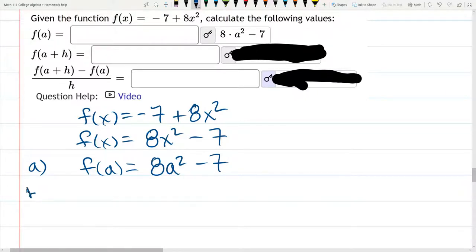Part b is similar. We're going to plug in a plus h. What I did here mathematically is not correct because if you write it like this, it means you're multiplying just a by 8 and you're just squaring the h. We need to square a plus h and multiply that by 8. So we wrap parentheses like this.